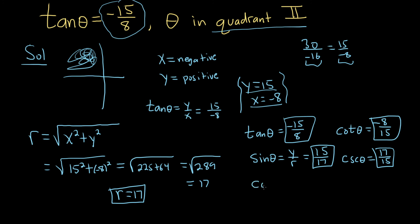And now we can find cosine of theta. That's x over r. So x here is negative 8 and r is 17. And the very last one would be the reciprocal of cosine, which is secant of theta. That will just be negative 17 over 8. And those would be the six trig function values of theta.